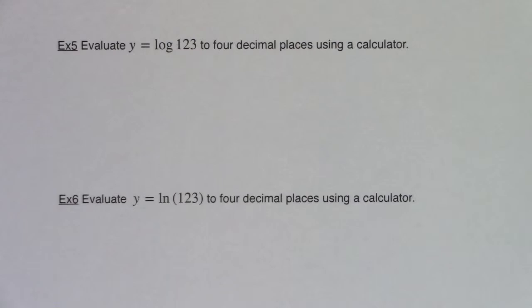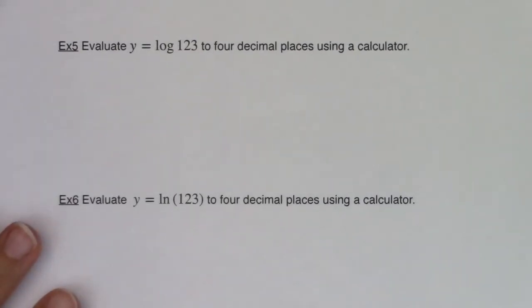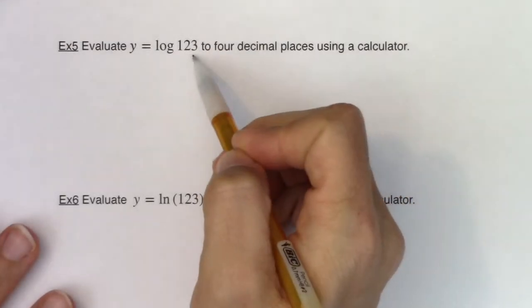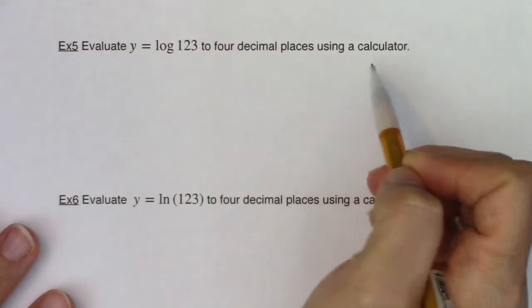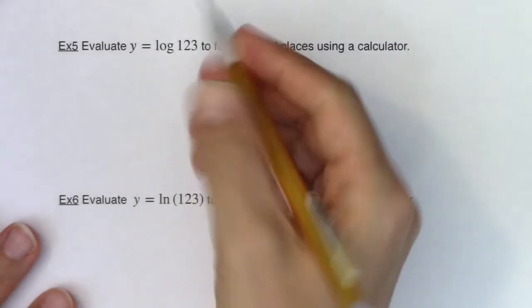Hey Math 31, welcome to example 5. Example 5 is asking us to evaluate log of 123 to four decimal places.